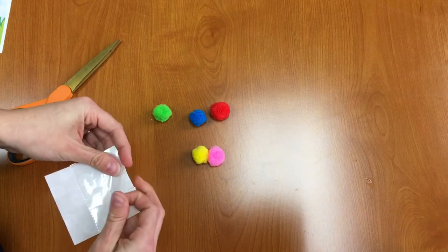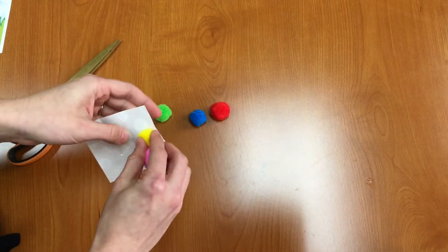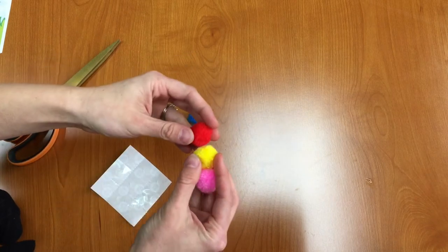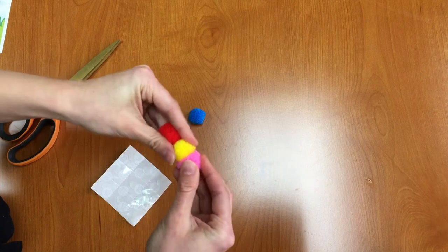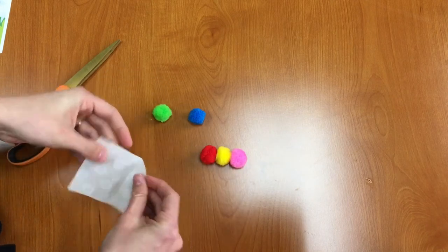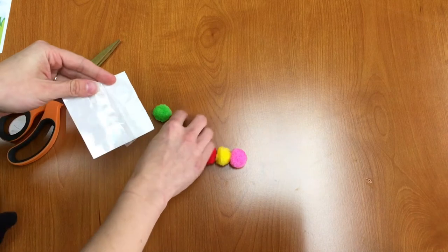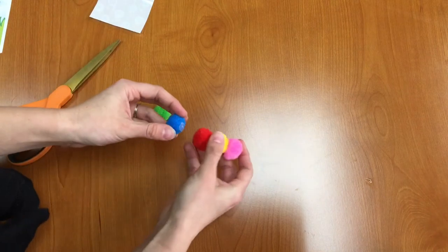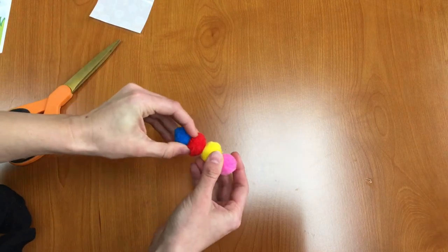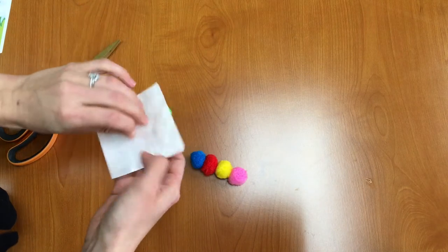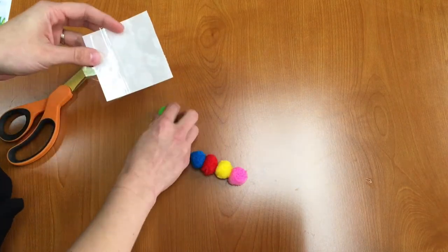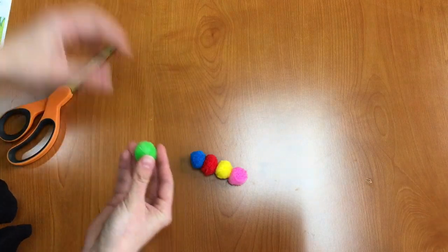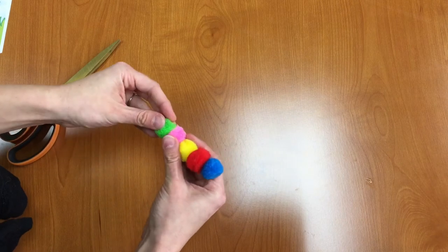Now let's do the same thing with the other pom-poms until we have a line of them. So we have three and four and one last one, and five.